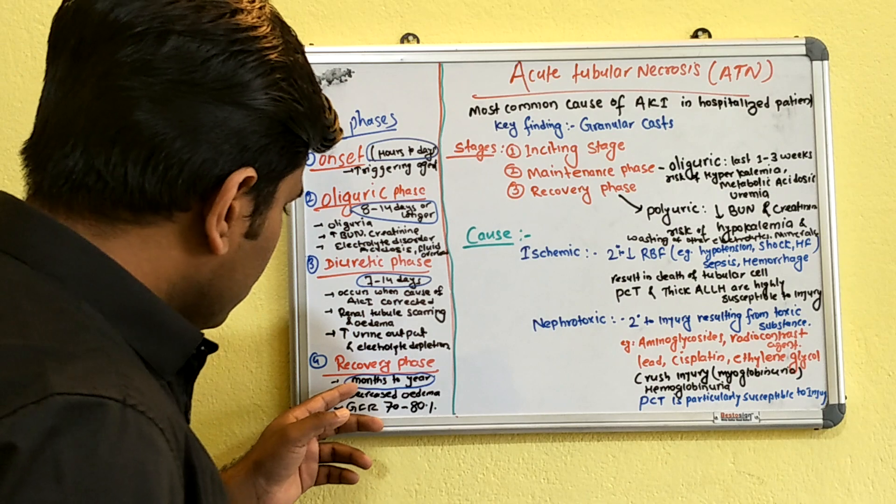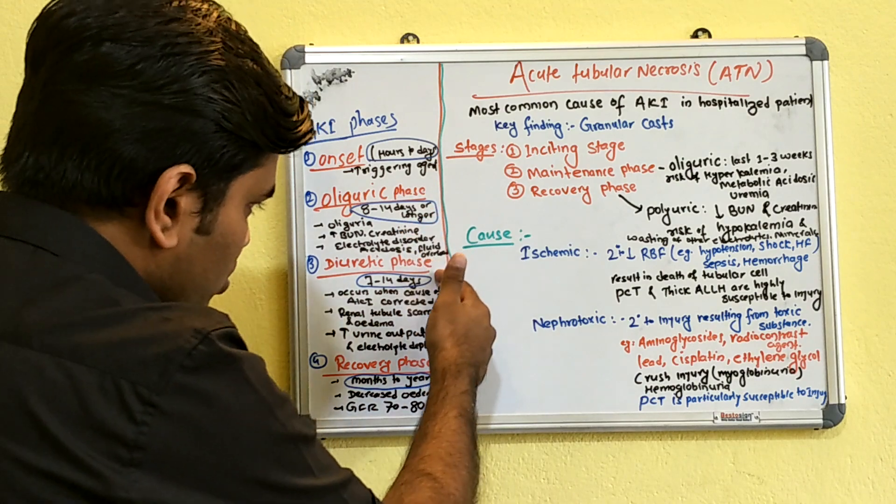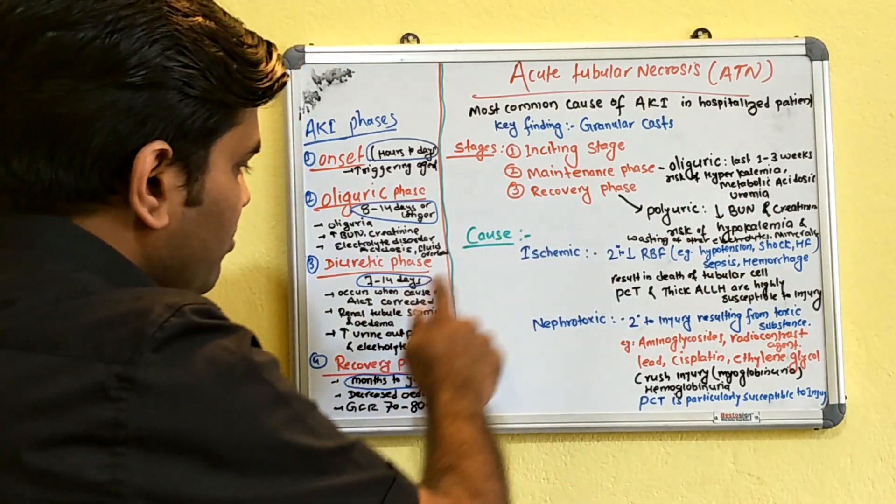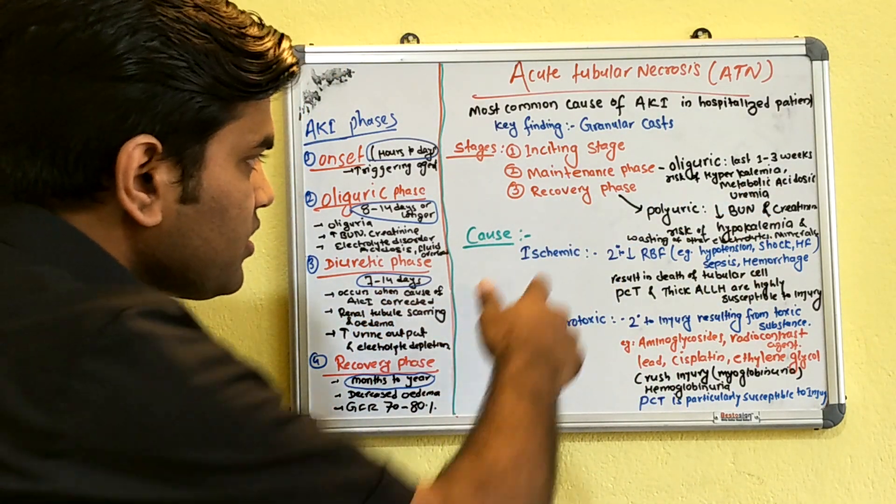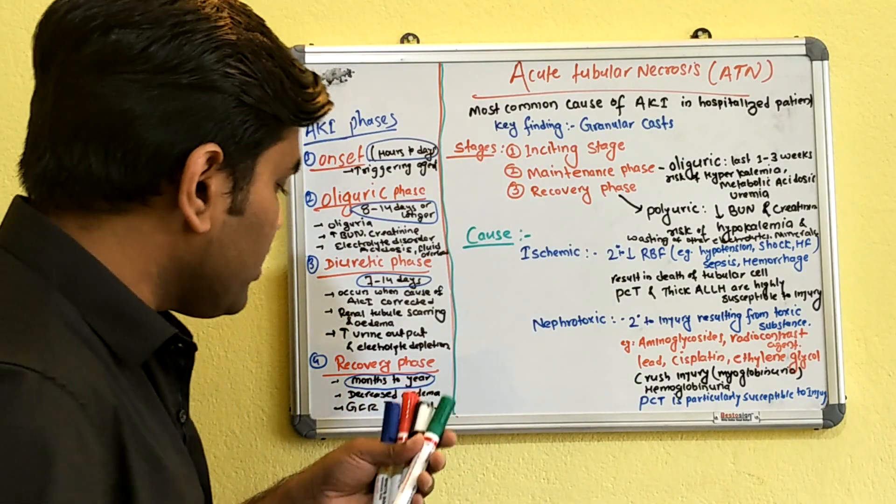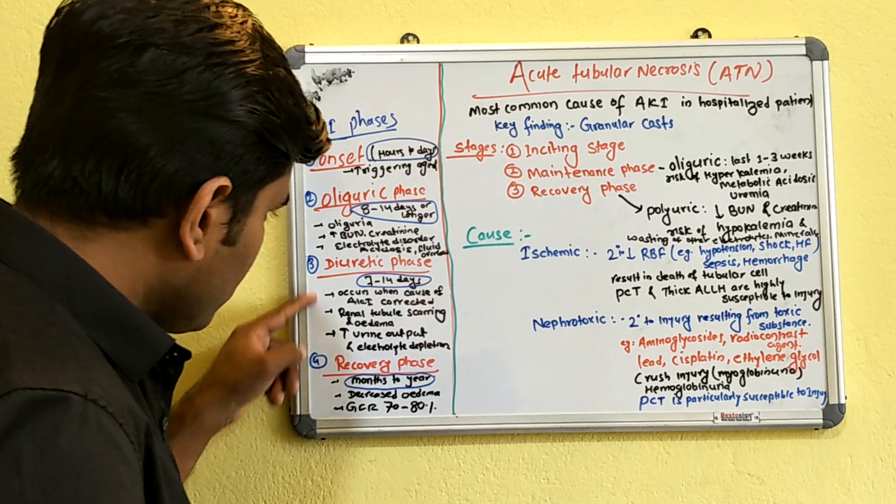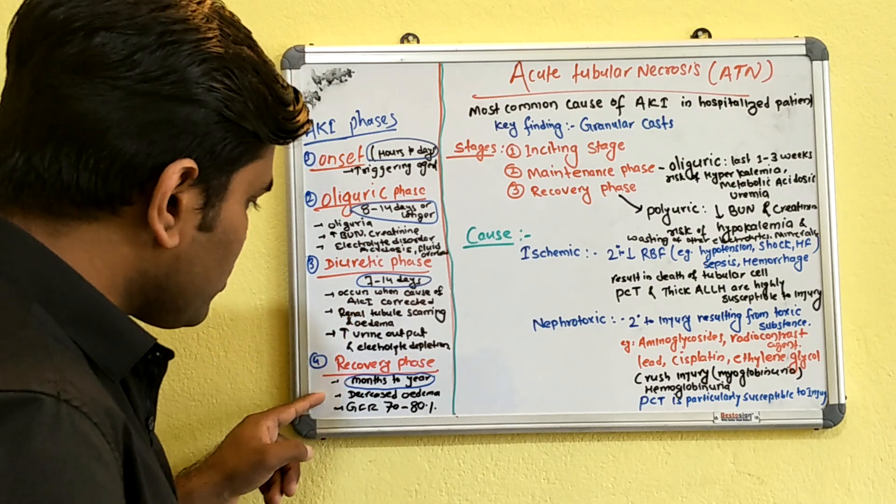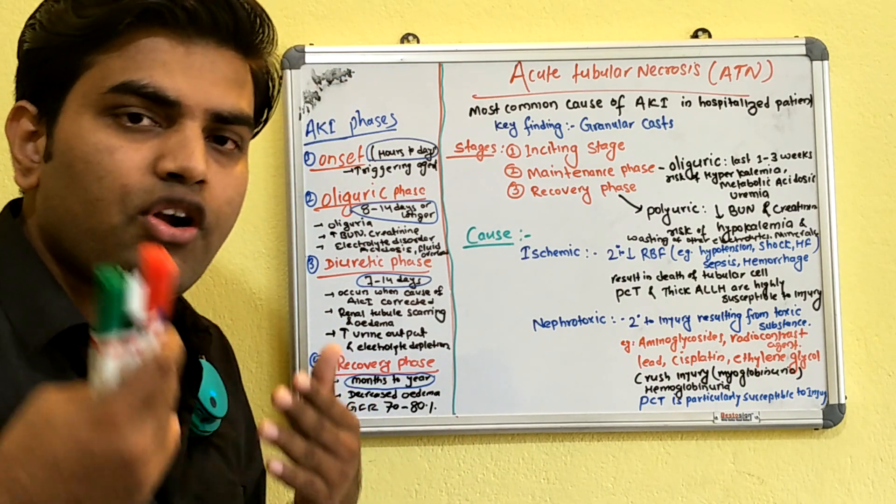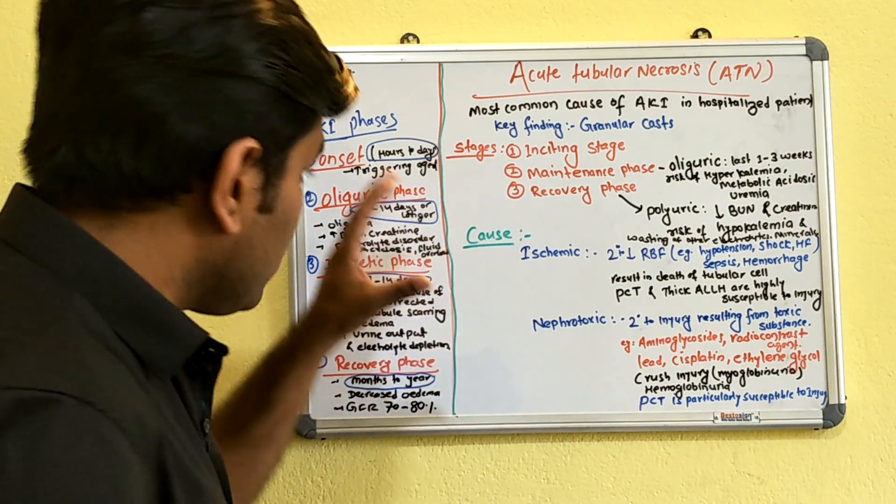Finally comes the recovery phase, which lasts from months to a year. After AKI, you don't see improvement in just five or six days. The diuretic phase brings improvement with decreasing creatinine and urea, but it takes time - usually several months to one year to get fully recovered. The edema present during the diuretic phase decreases and the kidney relatively comes to normal stage, with GFR around 70 to 80 percent.